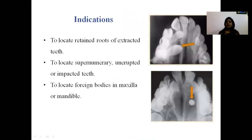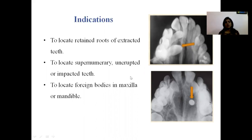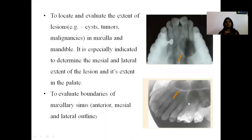The indications for maxillary occlusal radiograph include: first, to locate the retained roots of extracted teeth; to locate supernumerary, unerupted, or impacted teeth; and to locate foreign bodies in the maxilla or mandible. As shown here, this is a maxillary view where impacted teeth and foreign bodies located in the maxillary region can be identified.